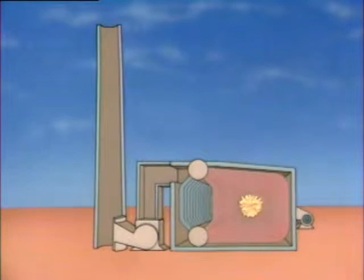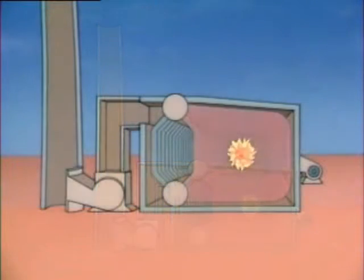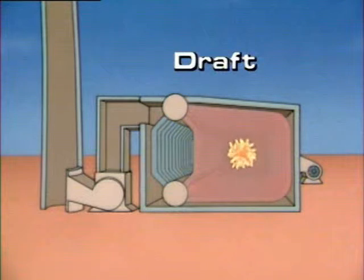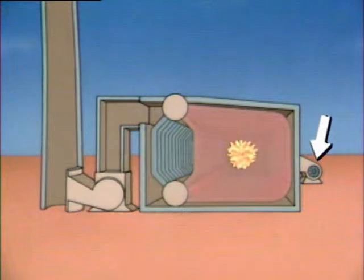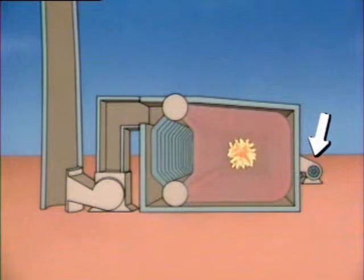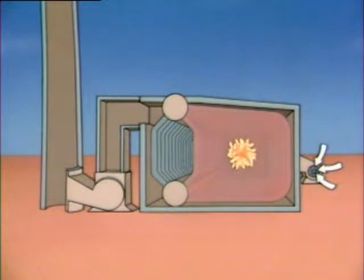The air flow into a boiler provides oxygen for combustion. Gases produced during combustion flow out of the boiler and are discharged from the stack. The flow of air and other gases through a boiler is referred to as draft. The components typically used to provide draft are fans. Force draft fans force air into the boiler — drawing air from outside and forcing it through the burner into the combustion area.